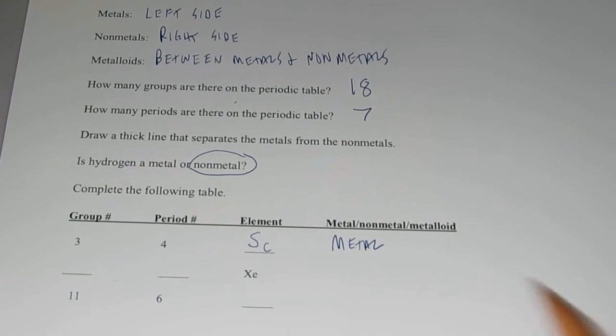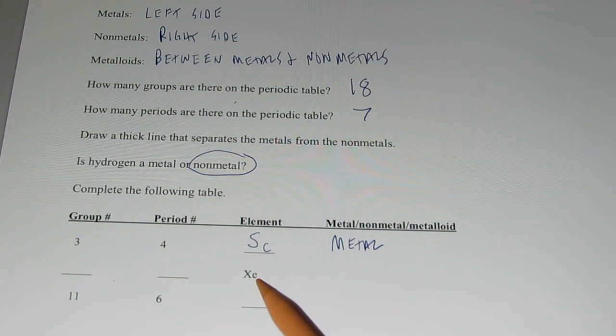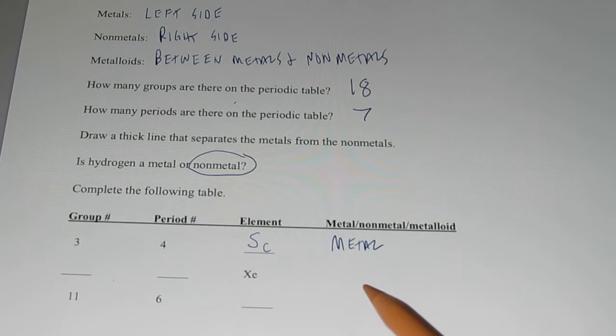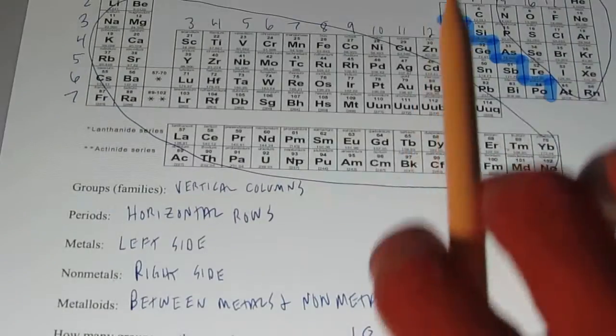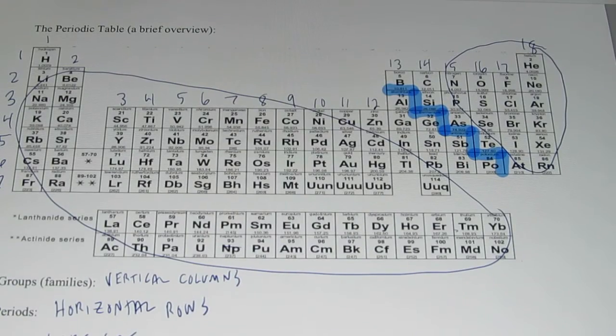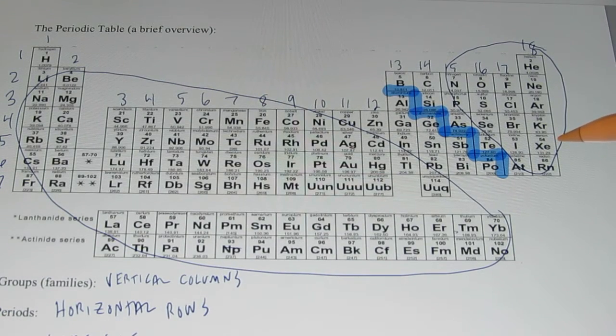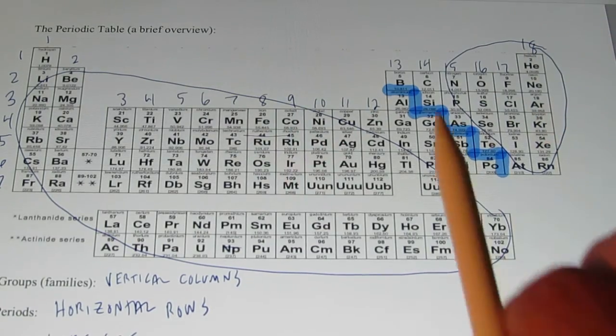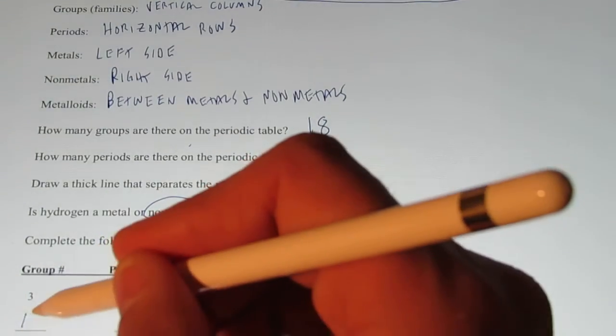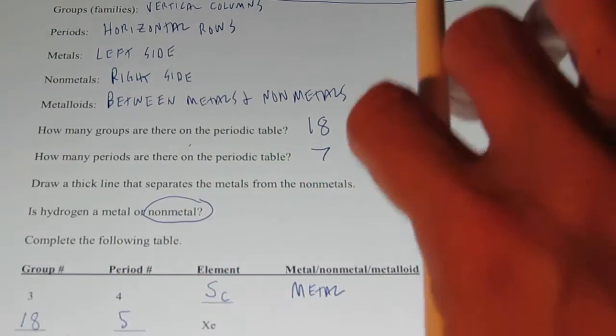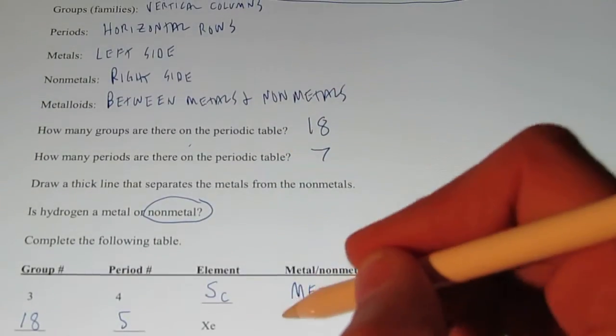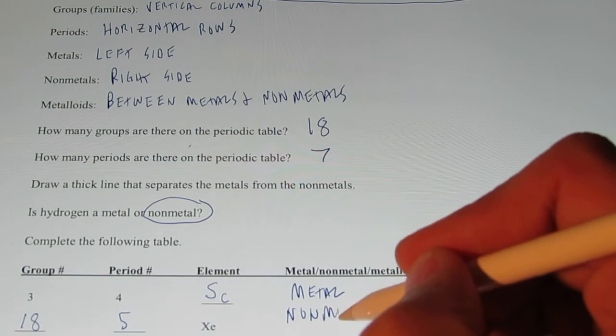Alright. Let's try the next one. XE, xenon. That's the element, so let's find it, then we'll find its group and period number, and we'll figure out if it's a metal, non-metal, or a metalloid. XE, let's see, where are you, XE, xenon. So, it looks like it's in group number eighteen and period number five, period five, group eighteen, so group eighteen, period number five. And as you saw, it was on the far right hand side of the periodic table, way over here, so we're gonna call that a non-metal.